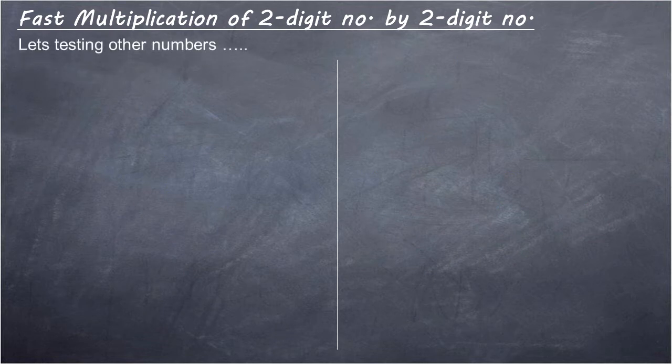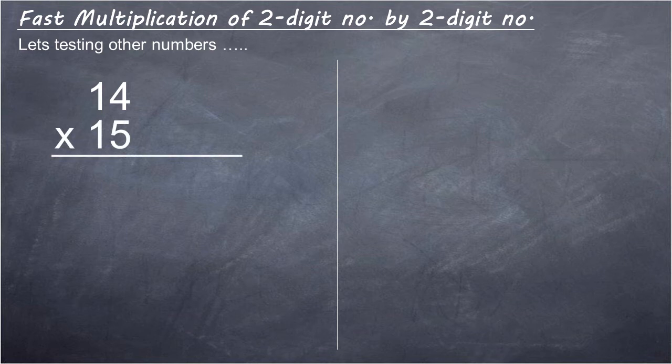Let's test other numbers. 14 multiply 15. We shall use base 10 for this question. 14 minus 10 equals plus 4. 15 minus 10 equals plus 5.